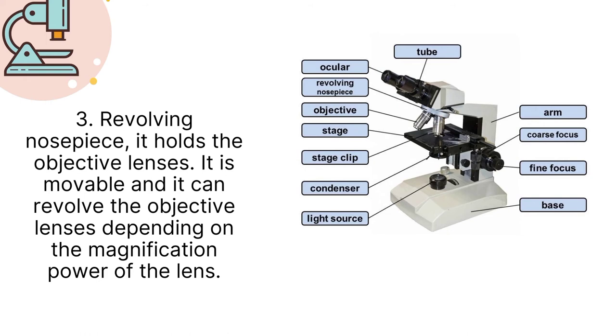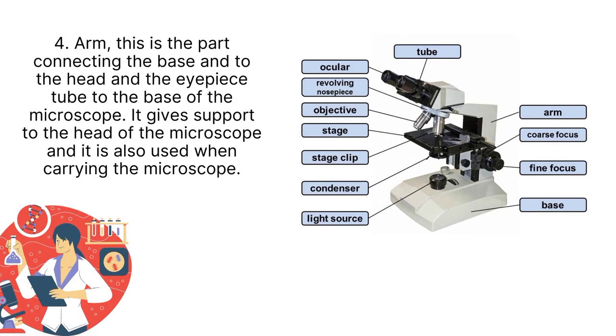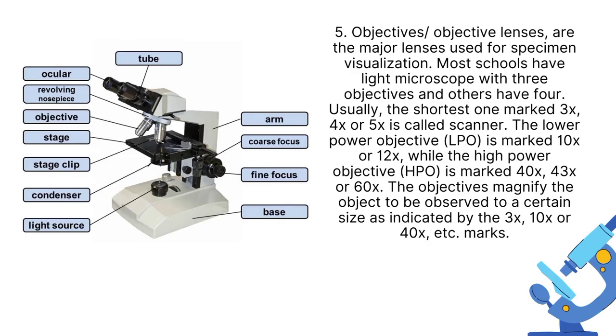Arm. This is the part connecting the base to the head and the eyepiece tube to the base of the microscope. The main function of arm is to support the head of the microscope and it is also used when carrying the microscope.